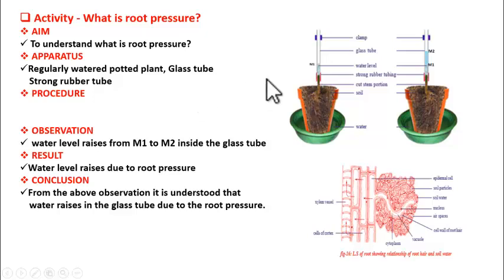Now how to do the experiment? Take the potted plant and cut the stem just above the ground. See here, the stem is cut here. Now fix the glass tube with the help of the strong rubber tube to the stem. Make sure that no water leaks out between the glass tube and the stem.